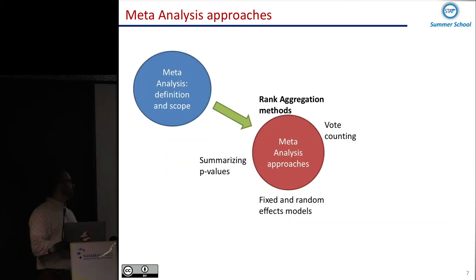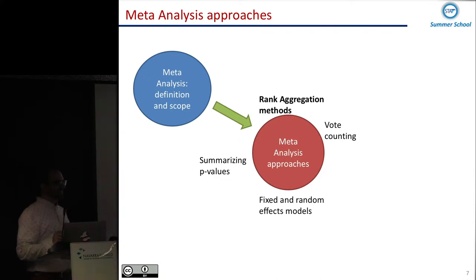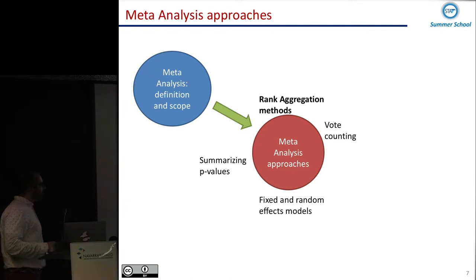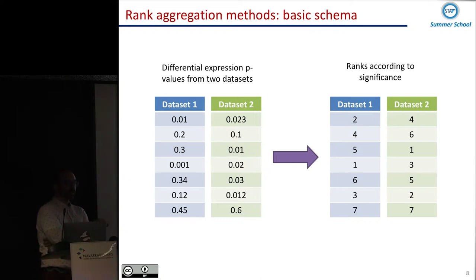Starting from the one that looks like the simplest — the rank aggregation methods. Does anybody know something about these methods? Here I give a very simple example of what rank aggregation is. Let's say I have two datasets — both are expression datasets — and for each gene I compute a p-value to check how differentially expressed it is. This is an extremely important approach.